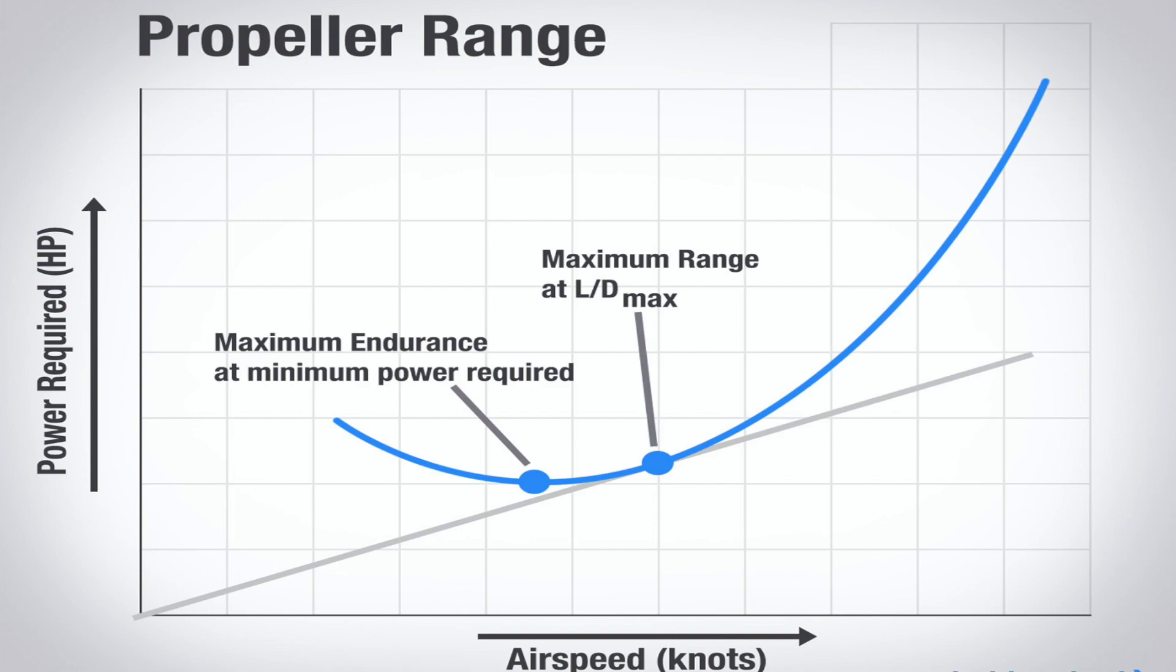The L/D max speed does not change as you transform a thrust required curve to a power required curve. The curve simply shifts around it. And if you draw a line from the origin tangent to the power required curve, you will see that it reaches the curve right at L/D max, as shown in front of you.